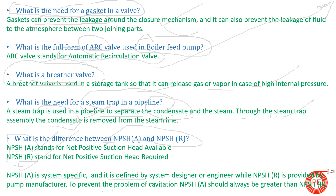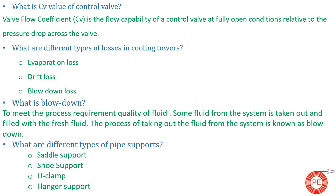The next question is: what is the Cv value of a control valve? Control valves are used in industry where we want to control flow. The Cv value is the flow coefficient — it represents the capability of a control valve at a fully open condition relative to the pressure drop across the valve. This value is defined and provided by the valve manufacturer.